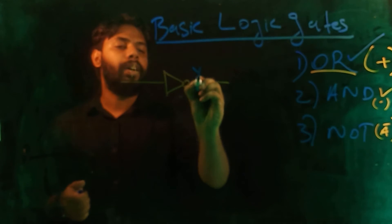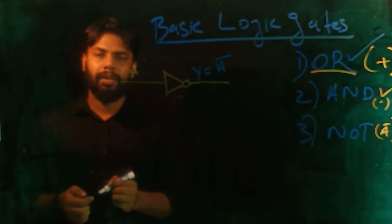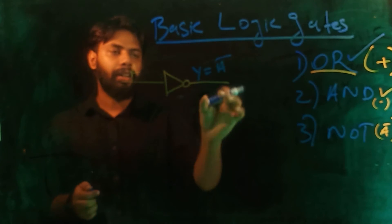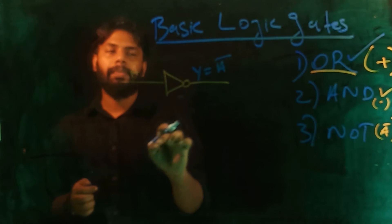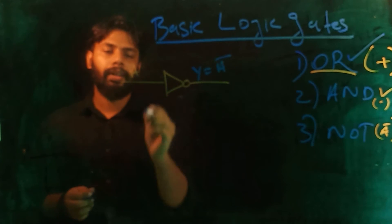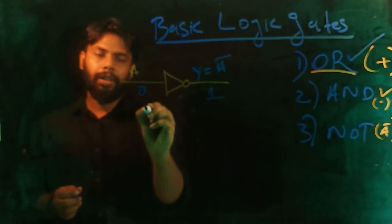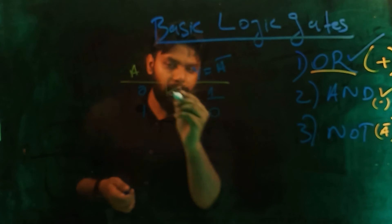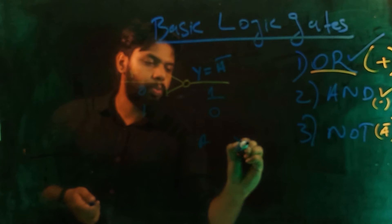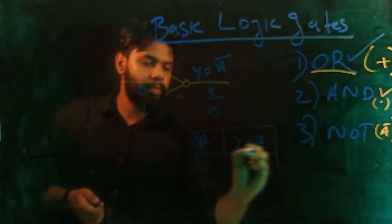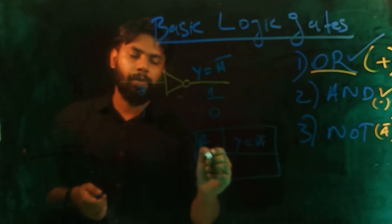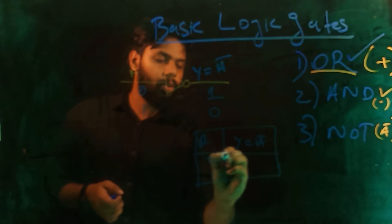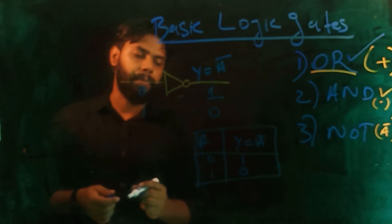The input is A and the output is equal to A complement. What we get at the input is just the opposite — the negation. There is a negation operation symbol. If I get input 0, the output is 1. If I get input 1, the output is 0. There is one input, so two power one gives 2 combinations: 0 and 1.